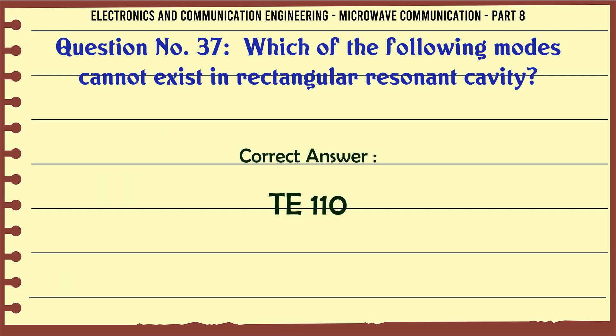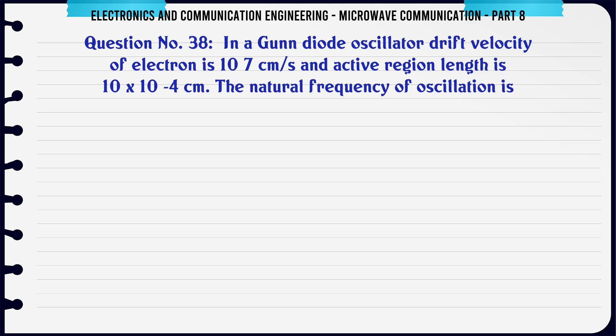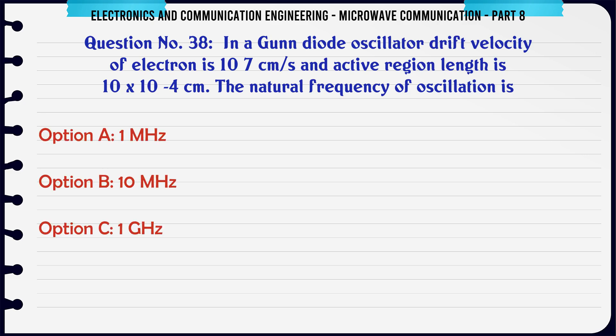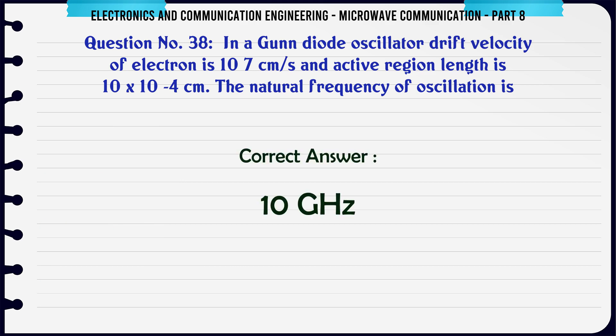In a Gunn diode oscillator, the drift velocity of electrons is 10^7 cm/s and the active region length is 10 × 10^-4 cm. The natural frequency of oscillation is — A. 1 MHz, B. 10 MHz, C. 1 GHz, D. 10 GHz. The correct answer is 10 GHz.